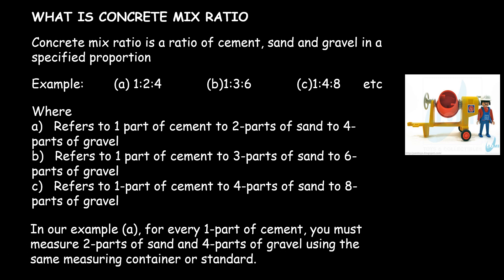In example A, 1 refers to one part of cement, 2 refers to two parts of sand, and 4 refers to four parts of gravel. In B, 1 refers to one part of cement, 3 refers to three parts of sand, and 6 refers to six parts of gravel. In C, 1 refers to one part of cement, 4 refers to four parts of sand, and 8 refers to eight parts of gravel.